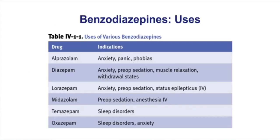Let's look at the uses for benzodiazepines. All of the benzos we need to be familiar with have a common ending — they're LAMS and PAMS. Drugs like alprazolam, diazepam, lorazepam — LAMS and PAMS is a common ending for a benzodiazepine. Alprazolam is a very important drug that can be used for acute anxiety. Emphasis on acute, because benzodiazepines have a rapid onset. That's what makes them useful for folks who have panic attacks — their rapid onset makes them beneficial in acute anxiety situations.